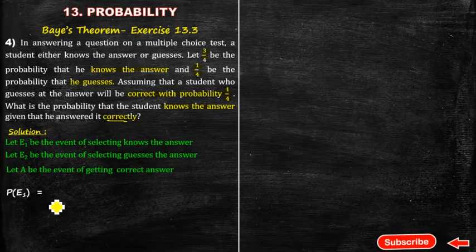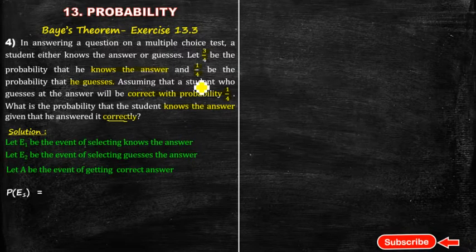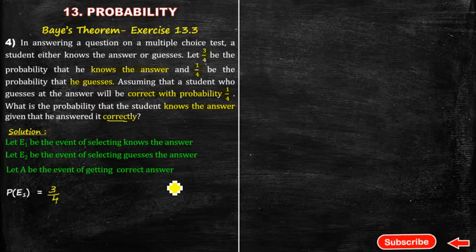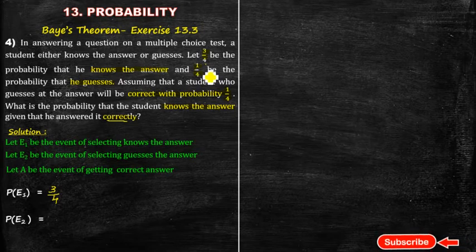The probability of E1 — the student knowing the answer — is 3/4. The probability of E2 — the student guessing the answer — is 1/4.